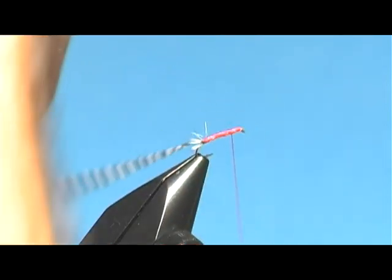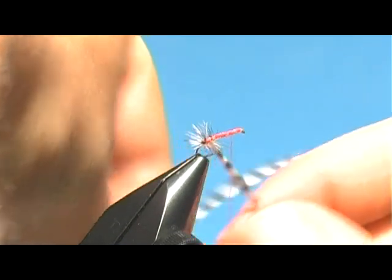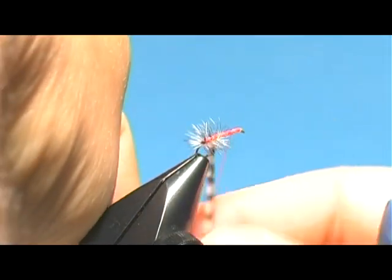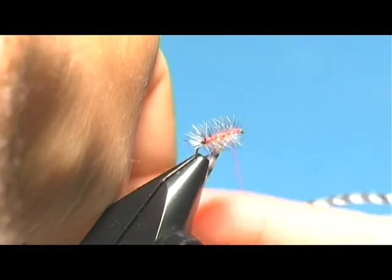And what I want to do with this is just barber pull it forward. It's not going to be quite as hackled as the Griffiths Gnat, but say four or five wraps of the hackle.